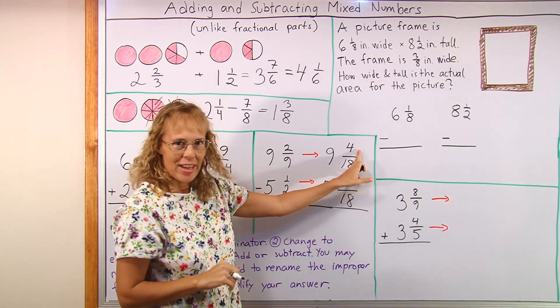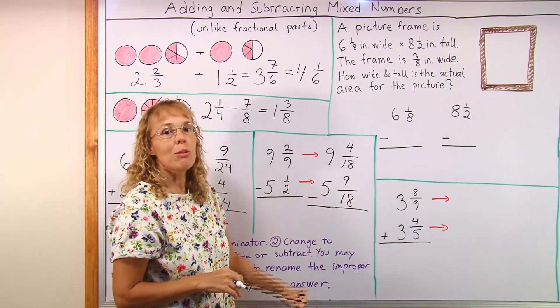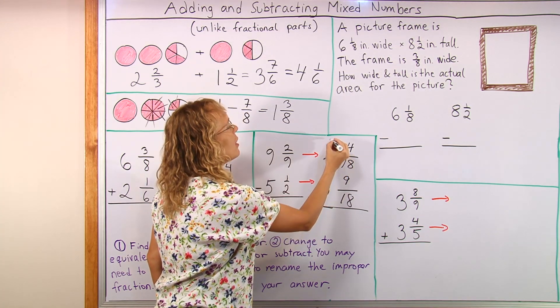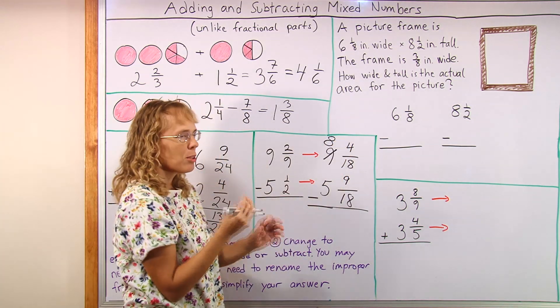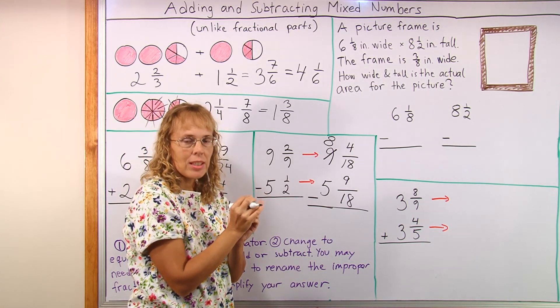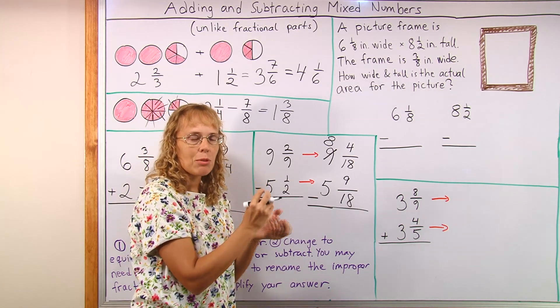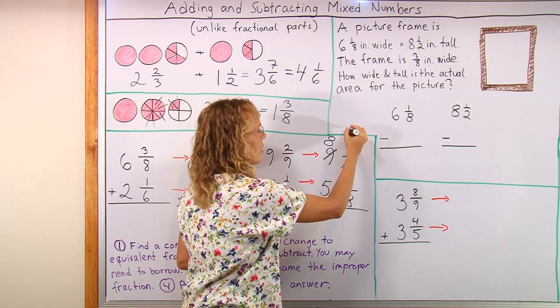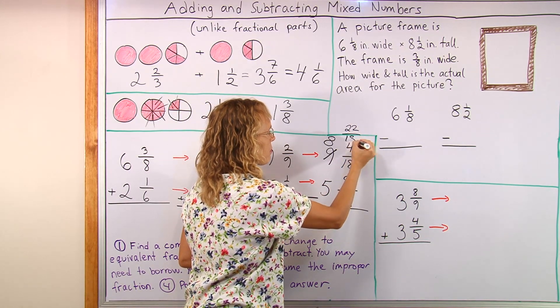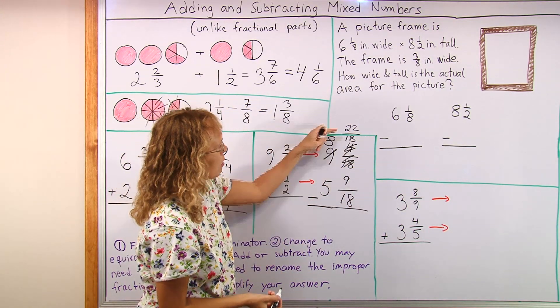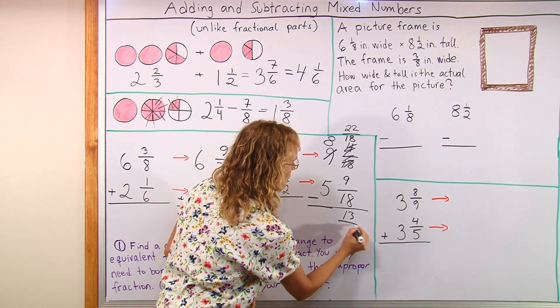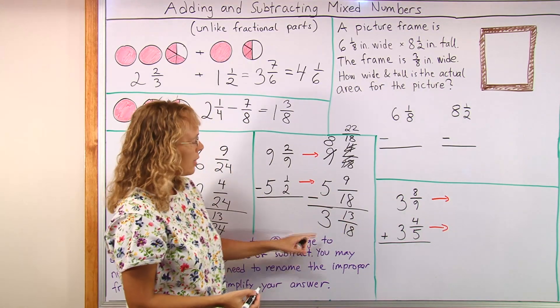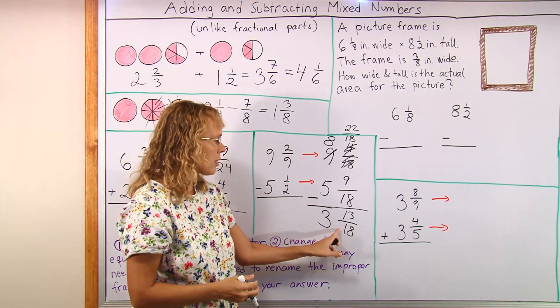Because from 4 18ths you cannot take away 9 18ths. We have to borrow. We're going to borrow one whole pie, leave 8 whole pies here. And then this pie needs to be divided into 18 parts, so we get 18 18ths we are borrowing. And here's already 4 18ths, so 18 and 4 makes 22 18ths. And now we can subtract 22 minus 9 is 13 18ths here, and then 8 minus 5 is 3. Okay and that's now all done too because this does not simplify.